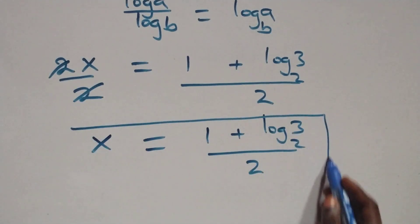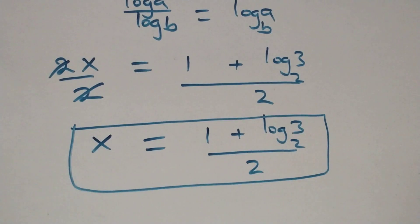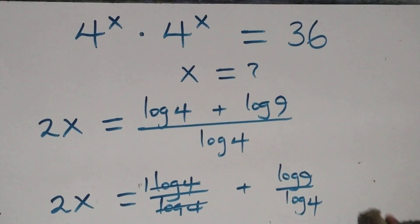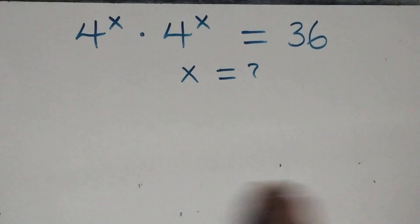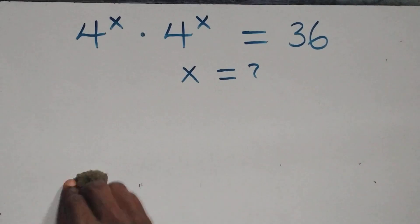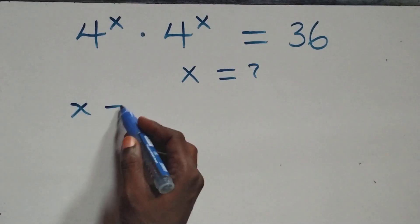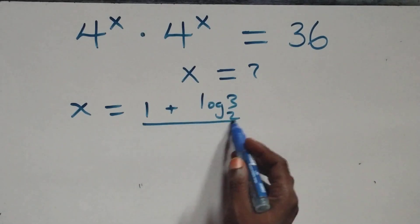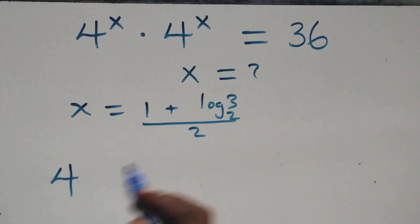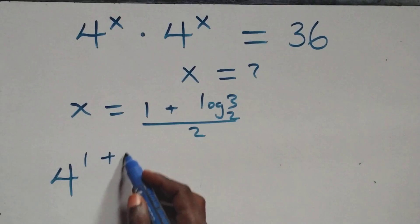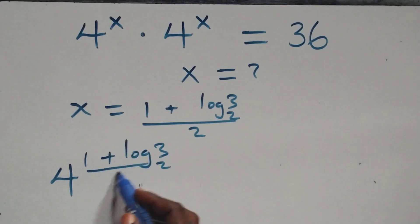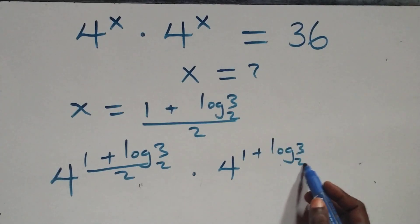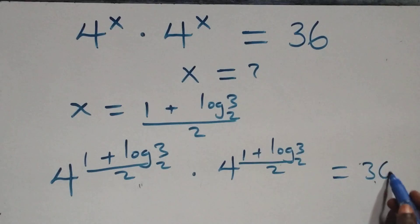That is, the value of x is (1 plus log₂3) all over 2. Let's check here if this satisfies the given problem. We substitute the value of x, which is (1 plus log₂3) over 2, giving 4 raised to power (1 plus log₂3) all over 2, equals 36 on this side.